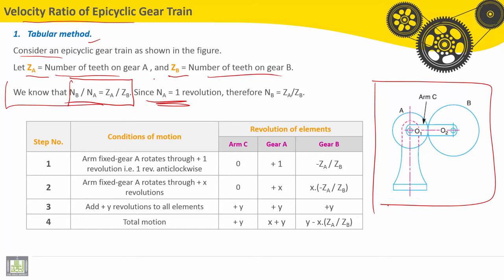Since NA is equal to one revolution, therefore NB should be equal to ZA divided by ZB.